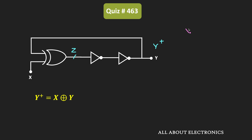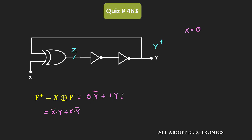First, let's see the output Y+ when the input X is equal to 0. Whenever X is equal to 0, then Y+ is equal to (0·Ȳ + 1·Y), because X XOR Y equals X̄·Y + X·Ȳ. So with X=0, this output Y+ will be the same as Y. That means if the input X is equal to 0, the output Y will not change, and the circuit will not work as a clock generator.